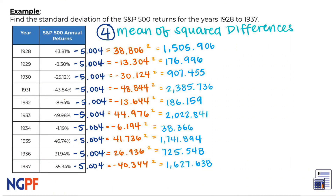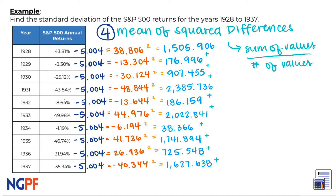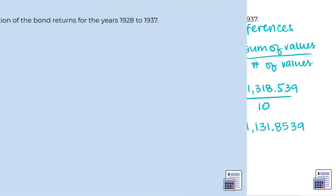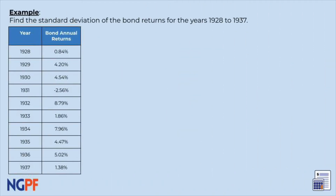We are almost there. We must now find the mean average of all of the values that we got from step 3. Just like earlier, we can find the mean by adding up all the values and dividing by the number of values. The sum of all the values from step 3 is 11,318.539, then divided by 10 is 1131.8539. Let's look at your practice problem — what is the mean average of your values from step 3?